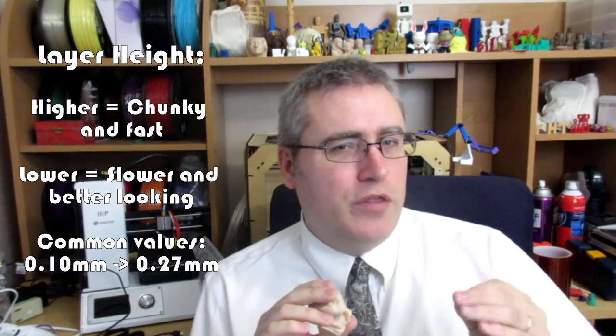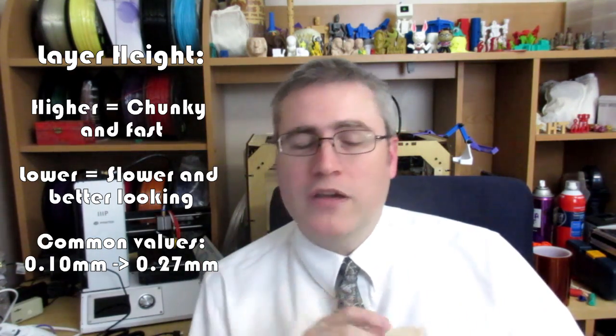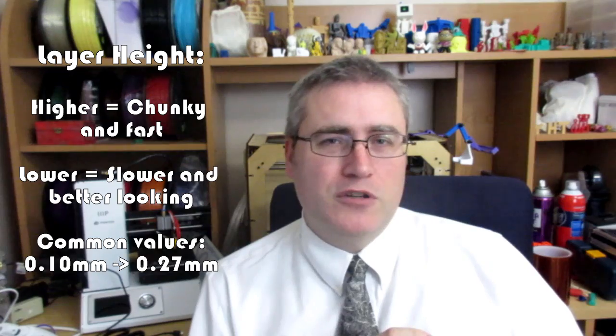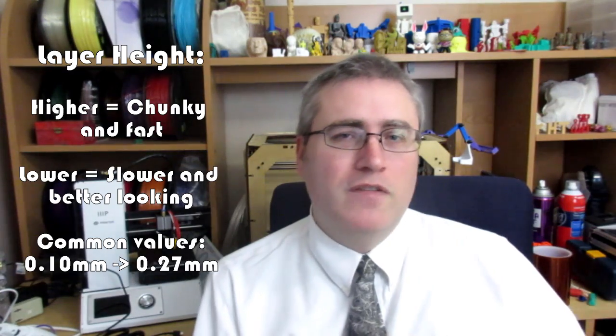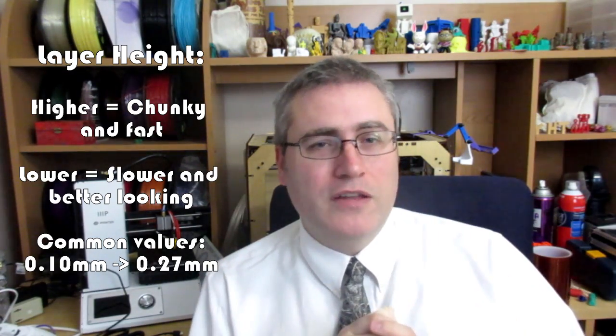Generally speaking, most 3D printers work between 100 microns and 250 microns, or 0.1 millimeters and 0.25 millimeters. Some 3D printers can go thinner and some can go thicker. Know what your 3D printer is capable of and what the range of layer thicknesses are. Some people like to experiment and see if they can push their 3D printer to 80 microns or 50 micron layer heights.